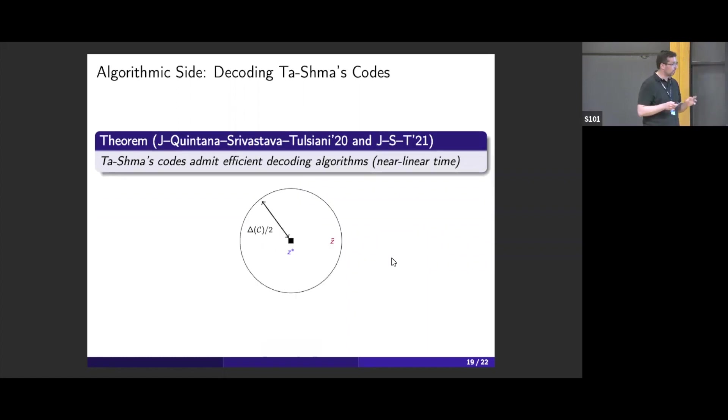If you have never seen the decoding task, it's as follows. We start with some code word Z star. Suppose that it gets corrupted by this adversary all the way to some Z tilde. Assuming the unique decoding ball, and having only Z tilde, you'd like to recover Z star. That's the unique decoding task. It's not for free that codes admit efficient decoding. For Tashma's codes, luckily, yes, we can efficiently decode them.